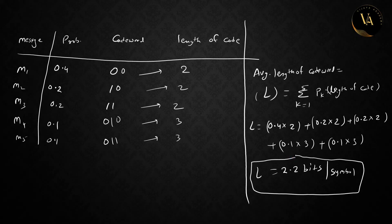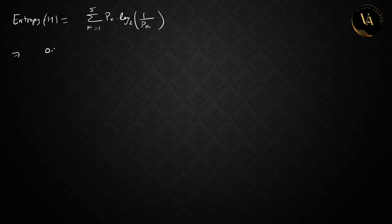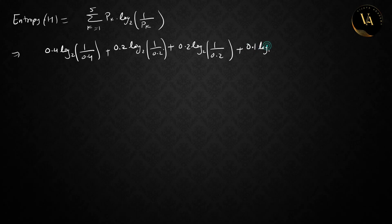The average length should equal the entropy. Entropy H = summation (k = 1 to 5) of P(k) × log base 2 of (1/P(k)). So H = 0.4×log₂(1/0.4) + 0.2×log₂(1/0.2) + 0.2×log₂(1/0.2) + 0.1×log₂(1/0.1) + 0.1×log₂(1/0.1).